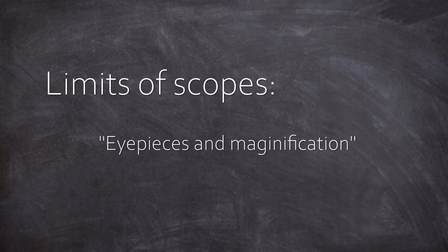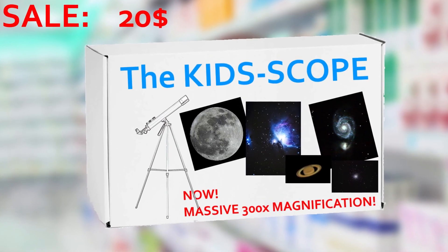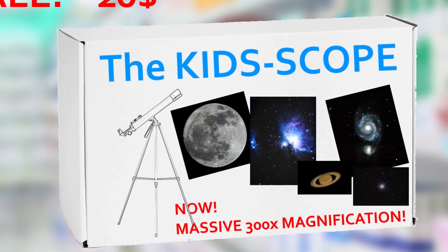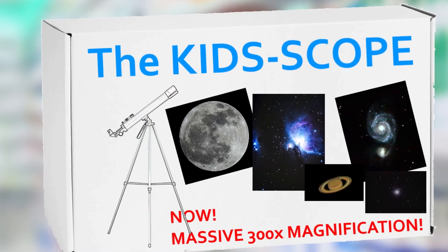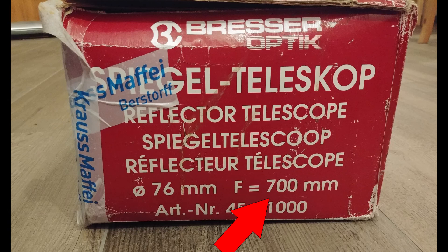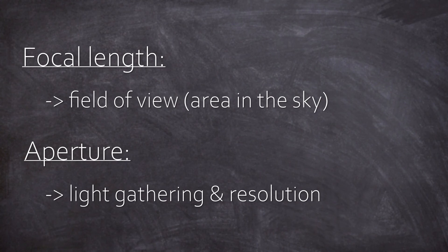We'll talk about that when we cover eyepieces and magnification limits in a future video. So if you see a cheap scope in your local drugstore — run and hide, you can't expect anything from it. More importantly, never give something like that as a present for kids; you're going to ruin their ambition for this wonderful hobby. But if you see a scope specification with a focal length of 700mm and an aperture of 76mm, Newtonian style telescope — that's cool. The focal length tells you something about the area of the sky that is in reach of the scope, and the aperture gives you information about the light-gathering capabilities and the resolution.